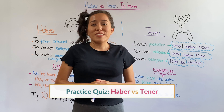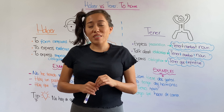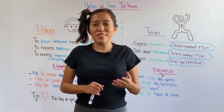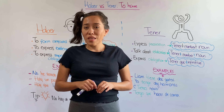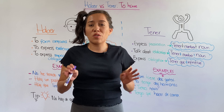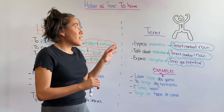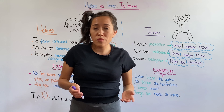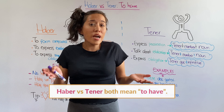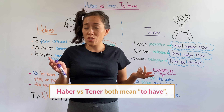Hi everyone, this is Daniela from Tell Me Spanish and I'm here to help you speak Spanish in a more natural way. I have always said that direct translation is the cry wolf of languages. Take haber and tener as an example — they are both directly translated as 'to have,' however, we never use them interchangeably.